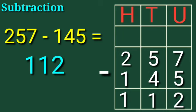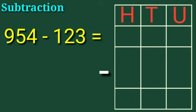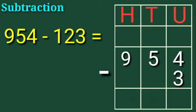Children, now let's take one more example: 954 minus 123. Children, 4 is under the units column, 5 is under the tens column, 9 is under the hundreds column. 3 is under the units column, 2 is under the tens column, 1 is under the hundreds column. Now children, 954 minus 123 — subtract these numbers.